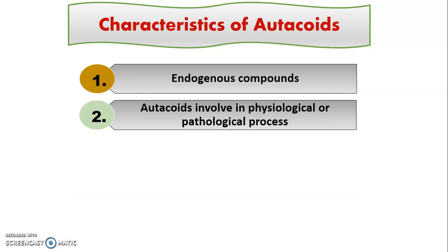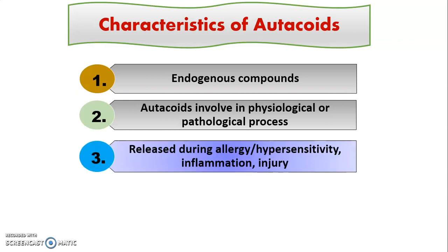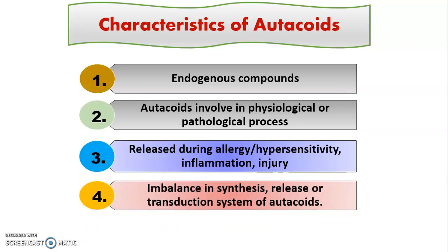Autocoids can be good and bad — they are involved in both physiological and pathological processes. In physiology, they help maintain normal body processes such as blood pressure, body temperature, and secretion. When their secretion becomes imbalanced, they lead to pathological conditions. Autocoids are generally released during allergy, hypersensitivity, inflammation, or cell injury, due to imbalance in synthesis, release, or transduction.